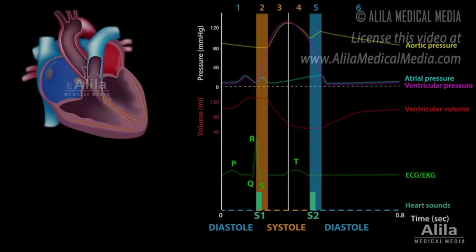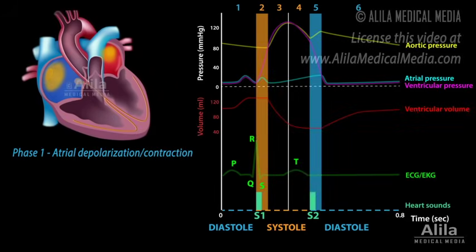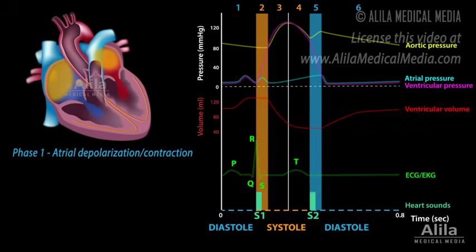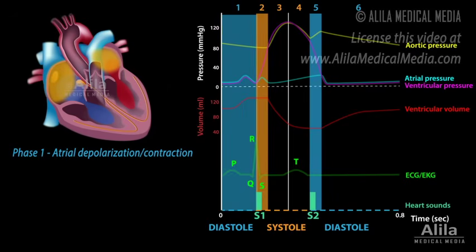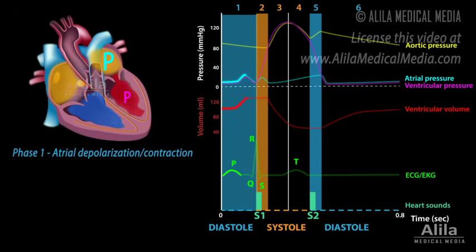The cycle is initiated with the firing of the SA node that stimulates the atria to depolarize. This is represented by the P wave on the ECG. Atrial contraction starts shortly after the P wave begins and causes the pressure within the atria to increase, forcing blood into the ventricles. Atrial contraction, however, only accounts for a fraction of ventricular filling, because at this point the ventricles are already almost full due to passive blood flow down the ventricles through the open AV valves.